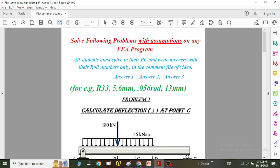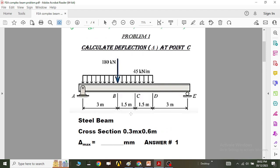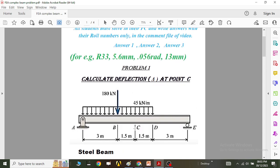For example, if we have a roll number 33, and this is problem 1, and we say after solving this problem you get the deflection as 5.6 millimeter, so you have to write it as roll number 33, problem 1 answer is 5.6 mm.